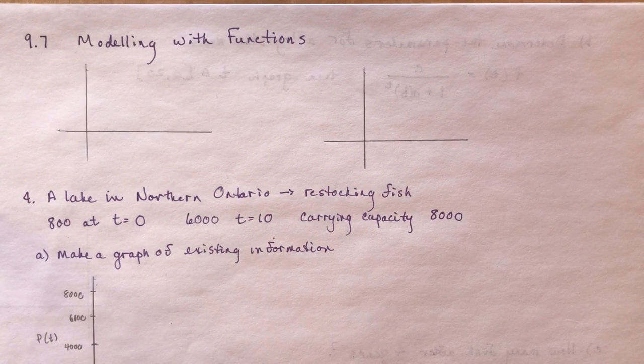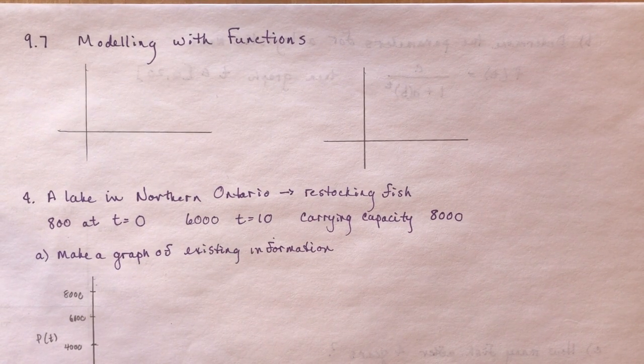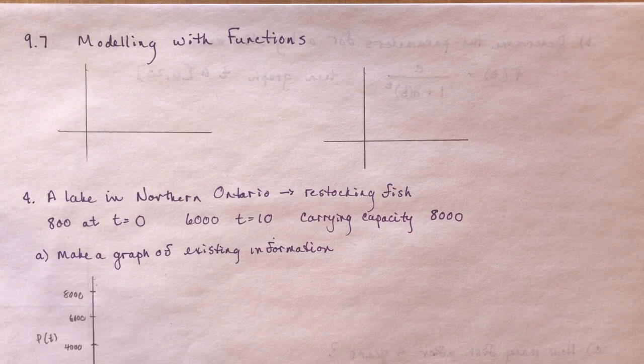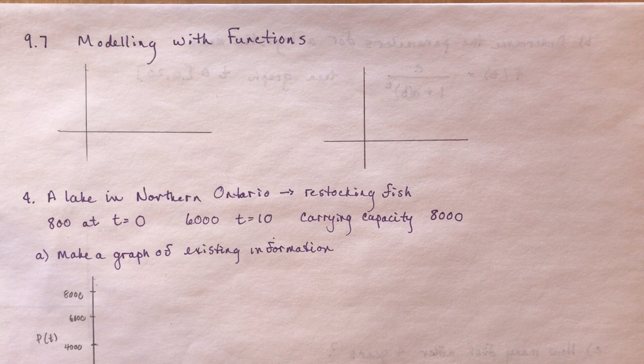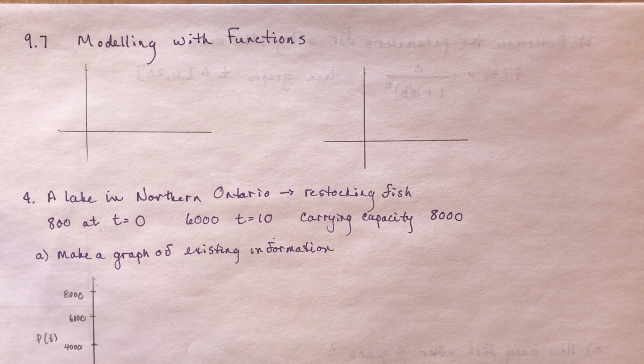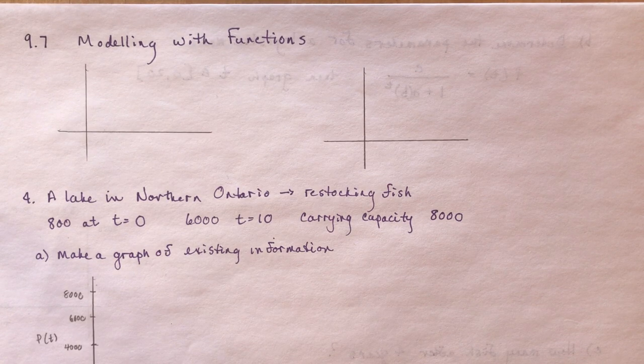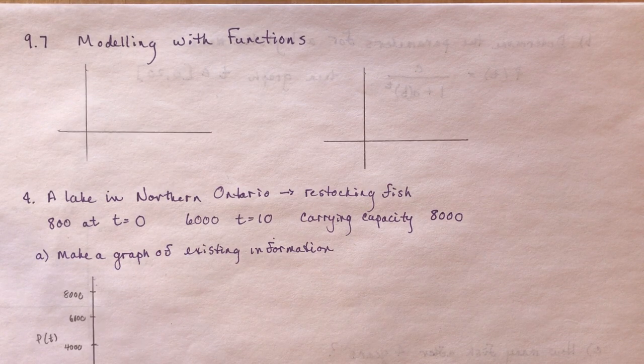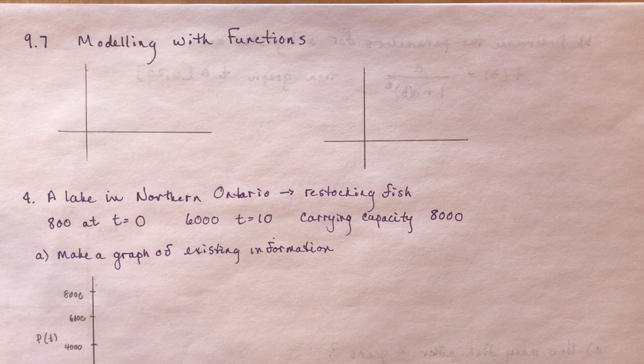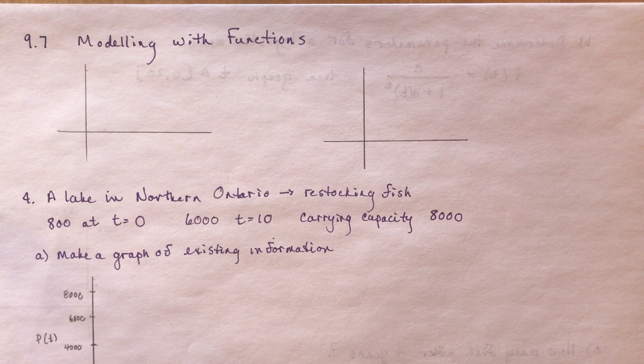9.7 Modeling with Functions. This is the last lesson in Chapter 9 of your Advanced Functions textbook, the Nelson book. I'm going to go over just a few of the ideas in it with an example because there really isn't too much new introduced here.